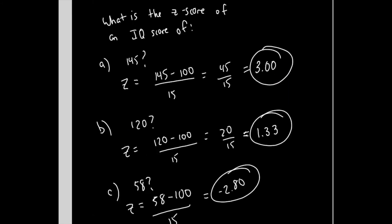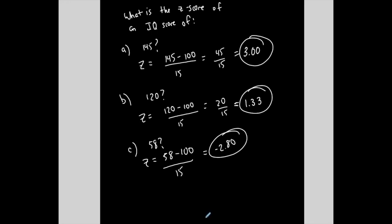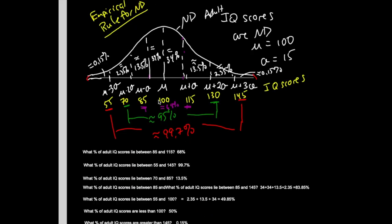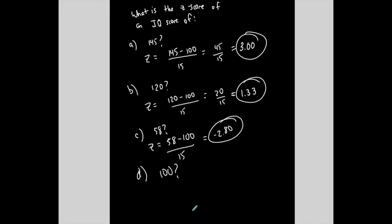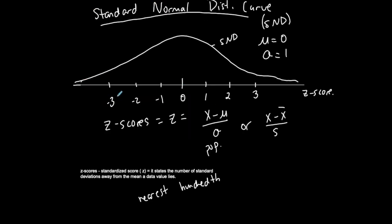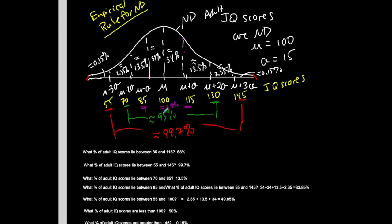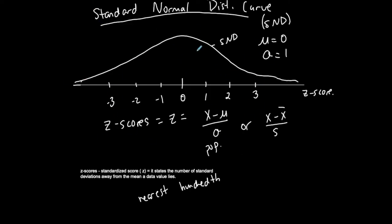A z-score is the actual number of standard deviations away from the mean that a data value lies, and this applies to all normally distributed cases — not just IQ scores. What z-score would you expect for an IQ score of 100? It's the mean, so you'd expect zero. Using the formula: 100 minus 100 over 15 gives zero. If I want to compare different normally distributed data with different means and standard deviations, I standardize it — that's why this is so important.